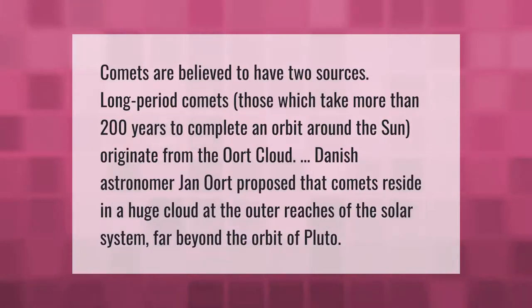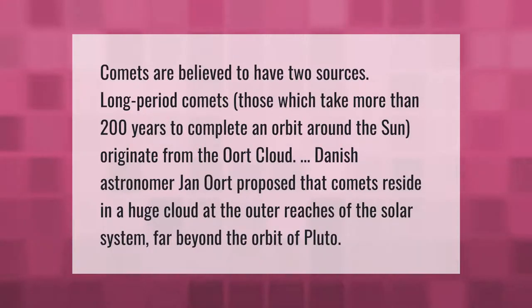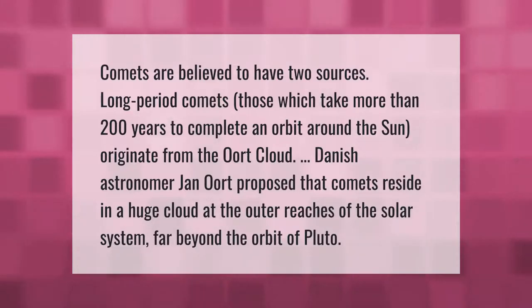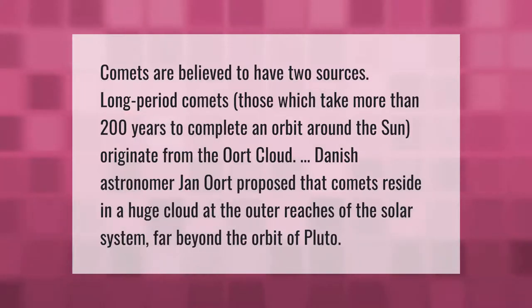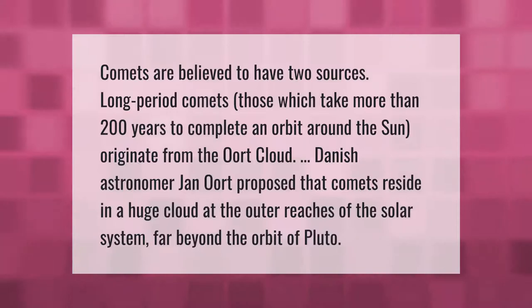Comets are believed to have two sources. Long-period comets — those which take more than 200 years to complete an orbit around the sun — originate from the Oort Cloud. Danish astronomer Jan Oort proposed that comets reside in a huge cloud at the outer reaches of the solar system, far beyond the orbit of Pluto.